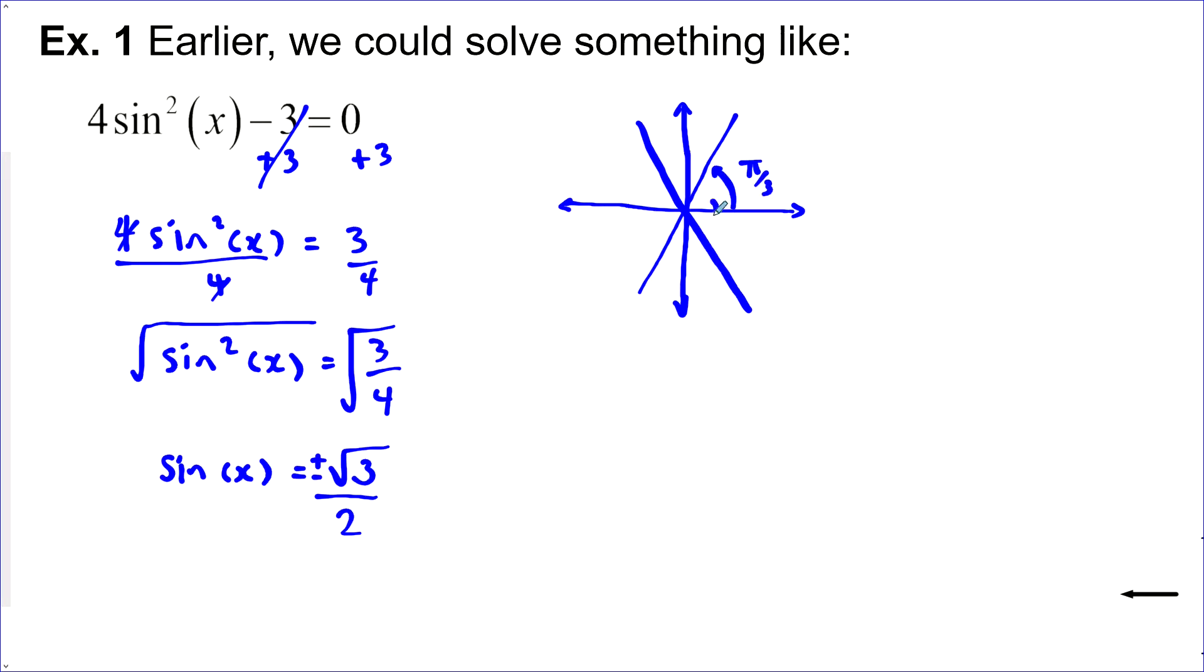So this would be pi over 3. This one would be 2 pi over 3. This one 4 pi over 3. And this one 5 pi over 3.